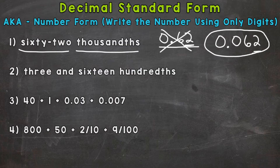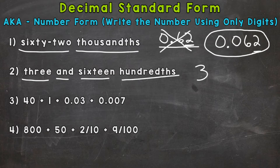Let's try number two, where we have three and 16 hundredths. Let's break this down. In number two, we do have a whole number: three. So let's write our three. Remember, 'and' represents our decimal.